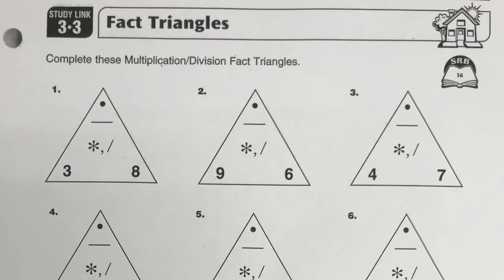So the first one here, if your factors are 3 and 8, the product is going to be 24. And again, that's going to give you four facts, which you should know, two multiplication and two division. But you don't need to write this part, just fill in the factors for each of these.